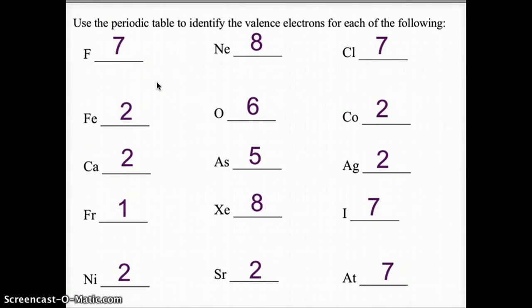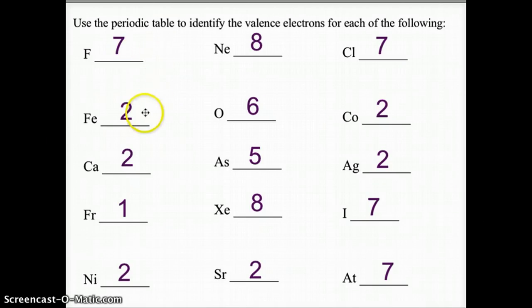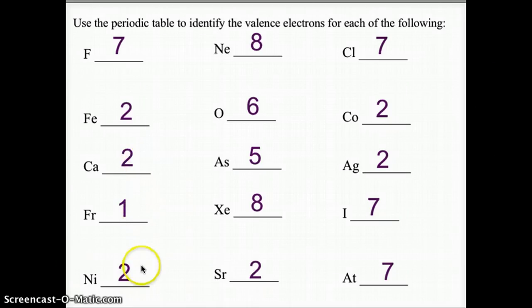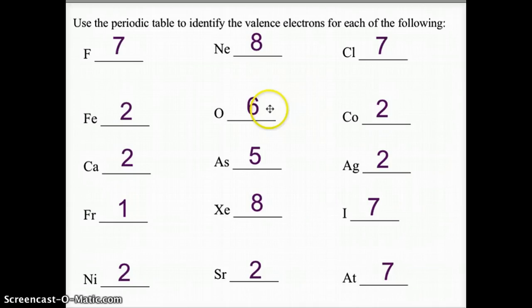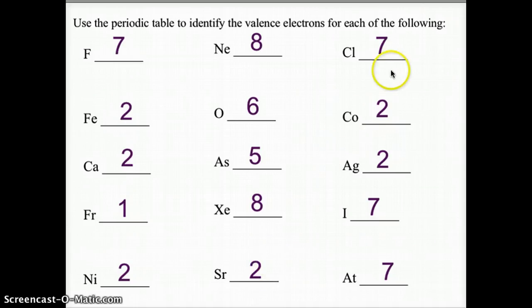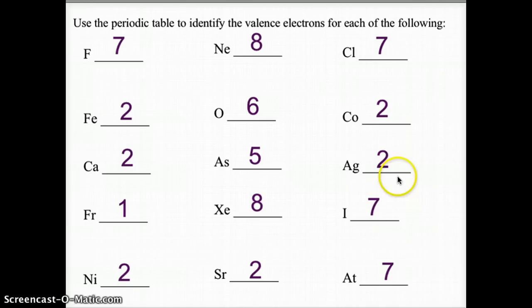So let's go ahead and see how you did. Fluorine: 7 valence electrons. Iron: 2. Calcium: 2. Francium: 1. Nickel: 2. Neon: 8. Oxygen: 6. Arsenic: 5. Xenon: 8. Strontium: 2. Chlorine: 7. Cobalt: 2. Silver: 2. Iodine: 7. And astatine: 7.